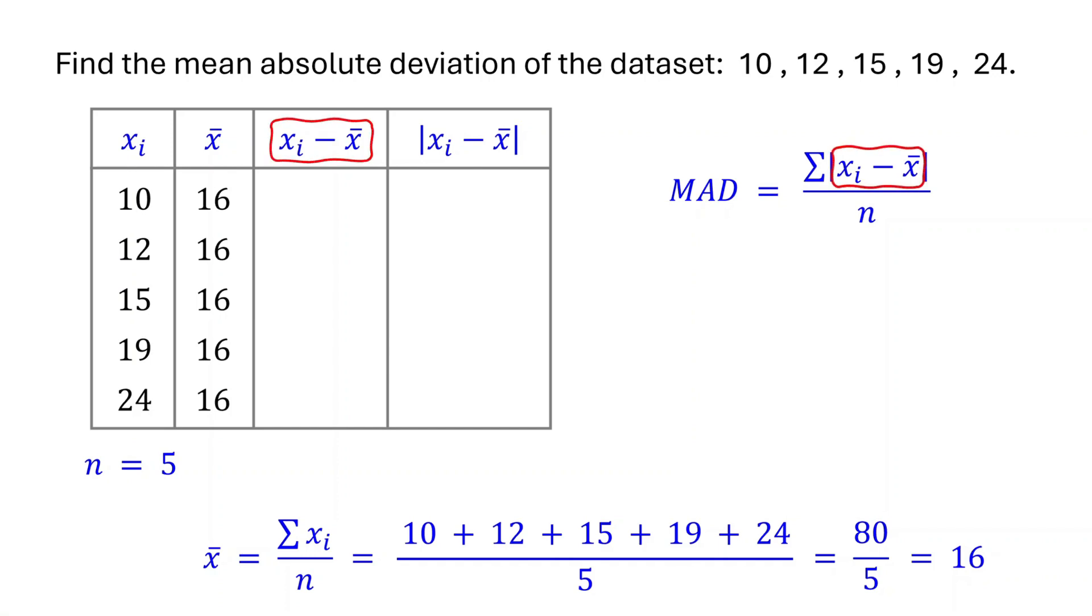10 minus 16 is negative 6. 12 minus 16 is negative 4. Do the same for the remaining rows. These differences are called deviations.